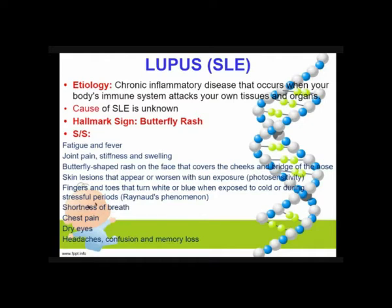Signs and symptoms for your systemic lupus erythematosus: patient will feel fatigue and fever, joint pain, stiffness, and swelling. The hallmark sign is the butterfly-shaped rash on the face that covers the cheeks and bridge of the nose. Skin lesions will also appear or worsen with sun exposure — patient will have photosensitivity. Fingers and toes will turn white or blue when exposed to cold or during stressful periods. We call this Raynaud's phenomenon.